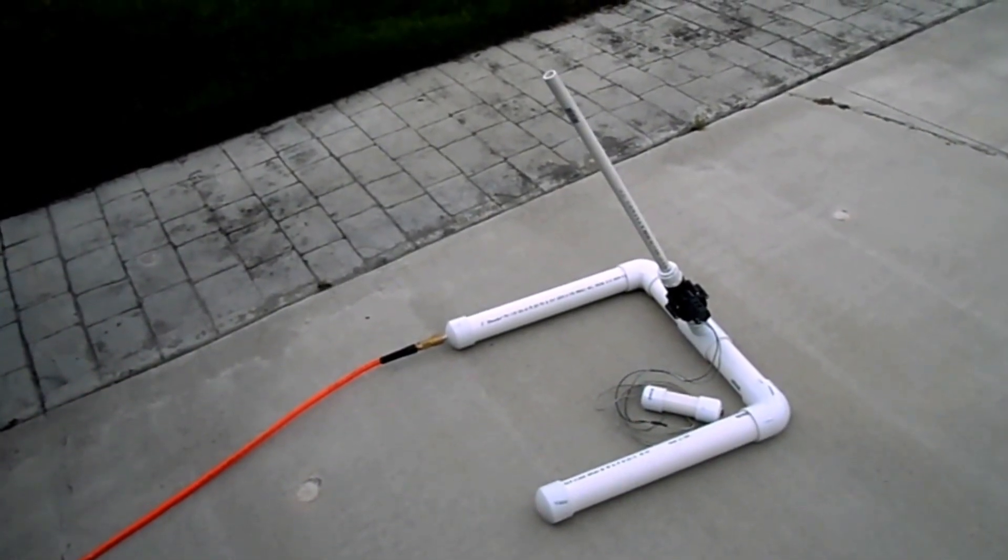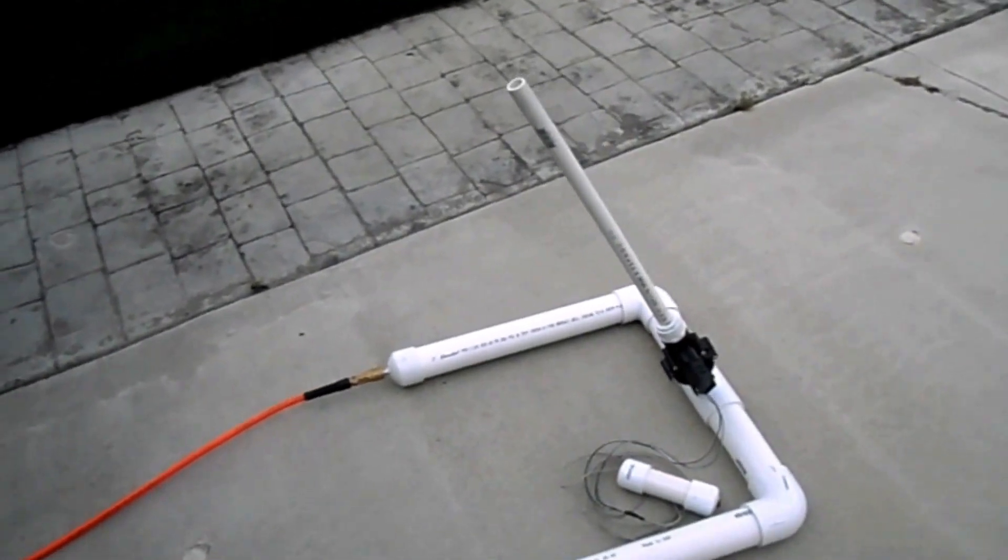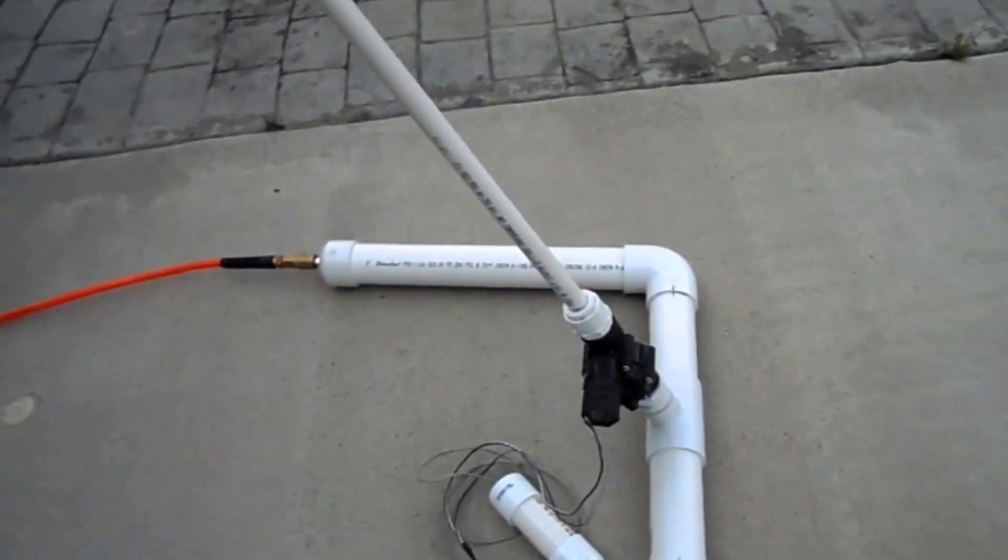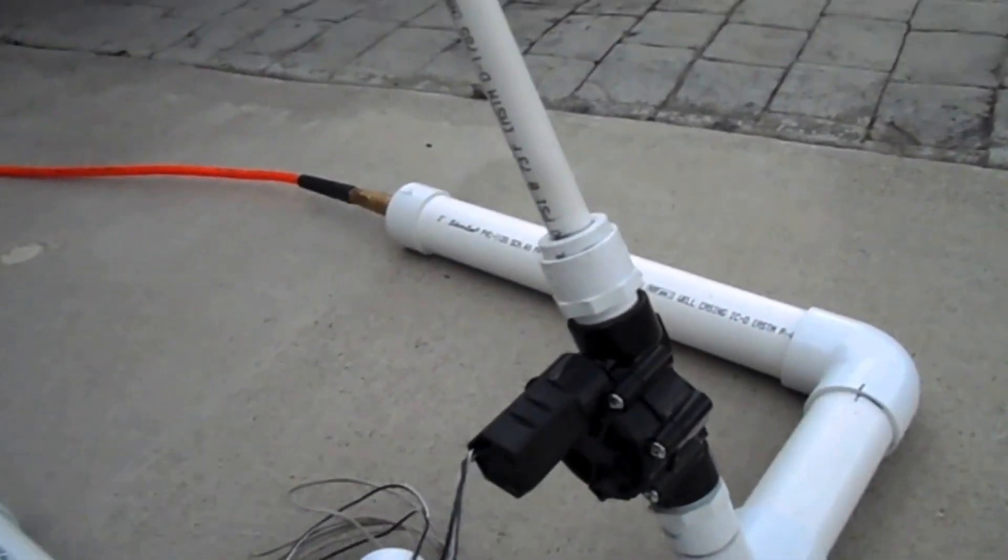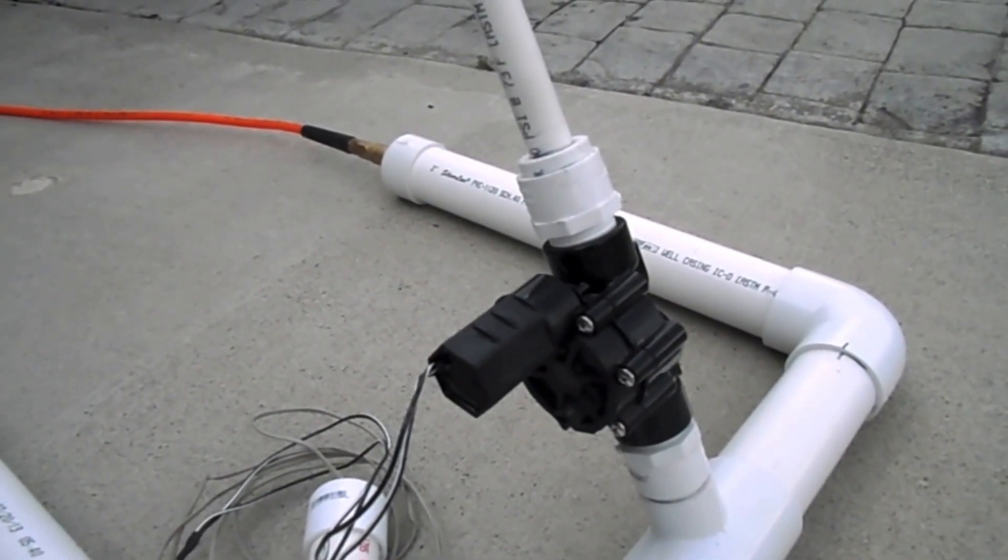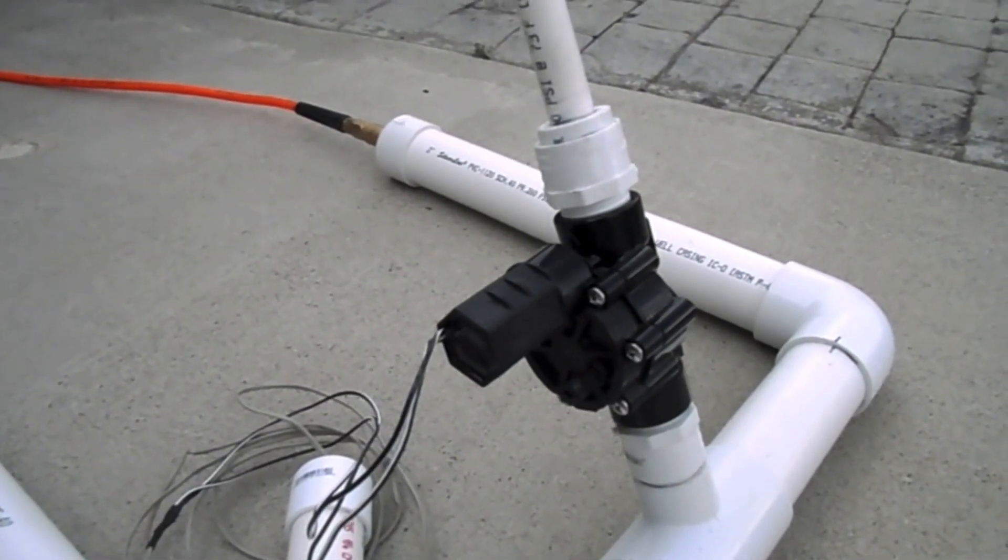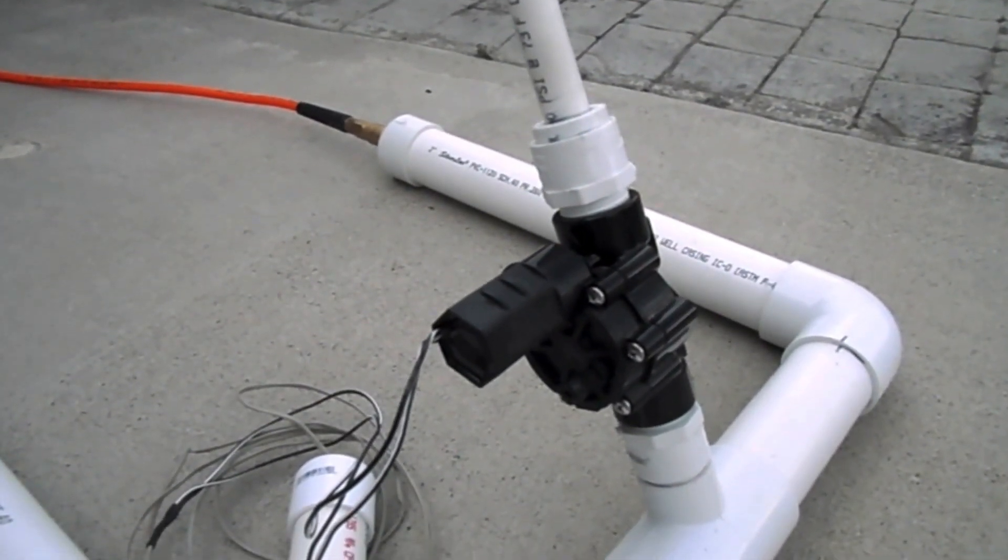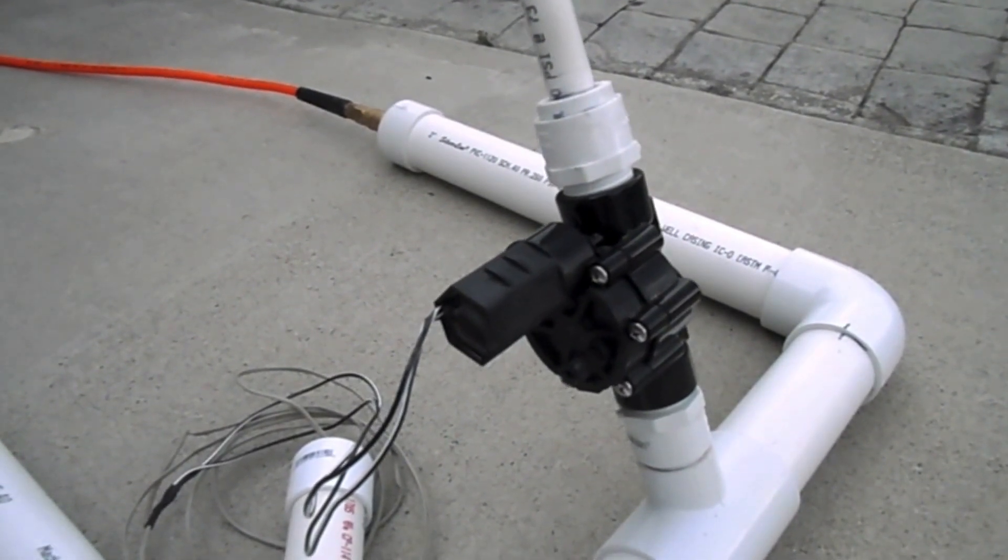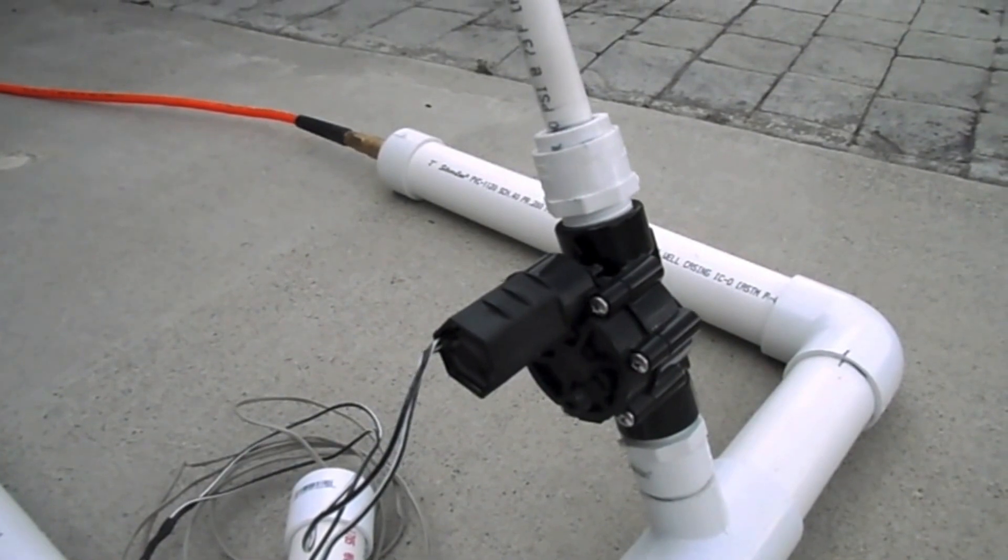So here is the completed rocket launcher. You'll notice that the valve is different than the one in the parts picture. And that's because the one that I had would not work off a 9-volt battery. It wouldn't trigger it. So I bought this other one. They're both Orbit brand. This one just a different kind. And it worked out better.